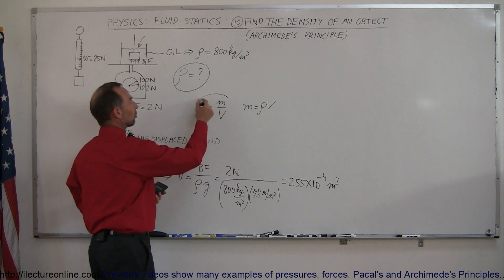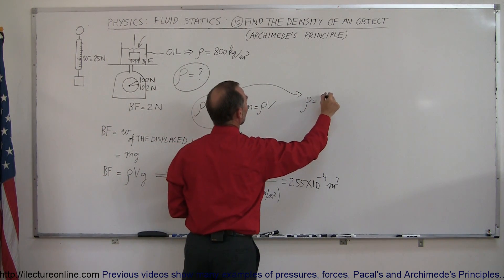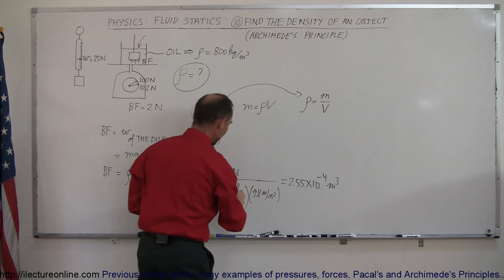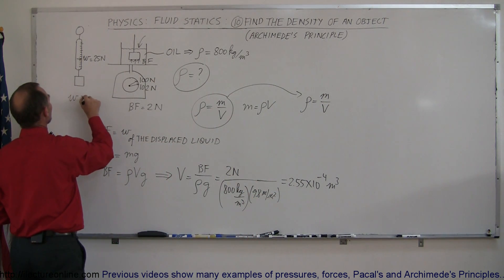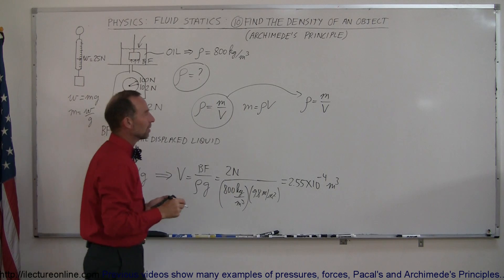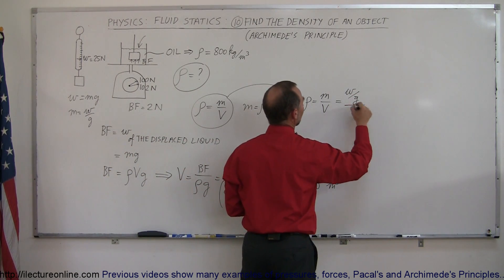And then to use this equation right here to find the density, we could say the density is equal to the mass divided by the volume, the volume that we just found. But to find the mass here, we have to say that the weight is equal to the mass times g, or the mass is equal to the weight divided by g. So that means that this is equal to the weight of the object in there, divided by g, divided by the volume.